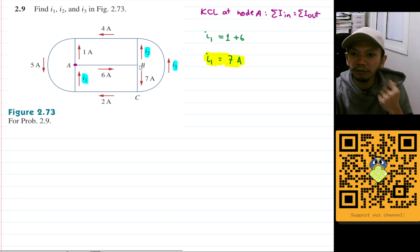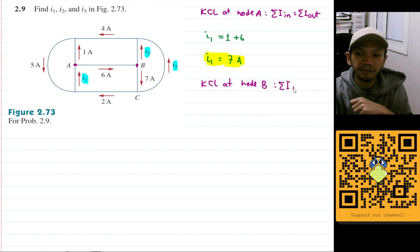We still need to find out i2 and i3. So for i2, I think we can just do it at node B here. Let's do that. Let's write KCL at node B. KCL says that the sum of the currents that goes in will equal the sum of the currents that goes out.